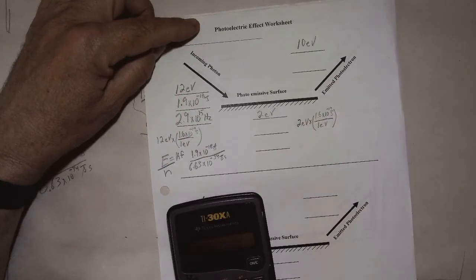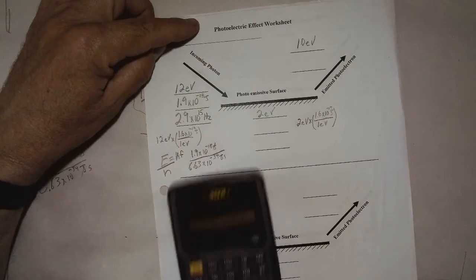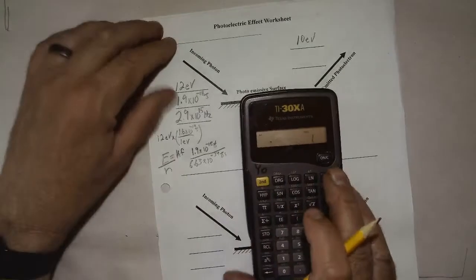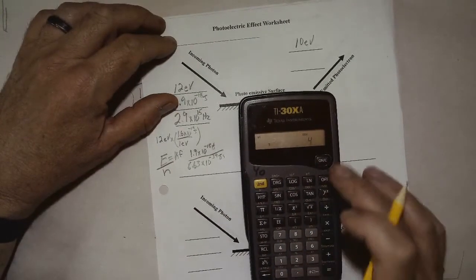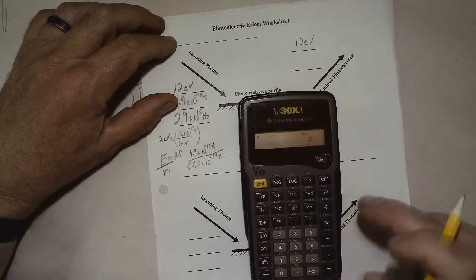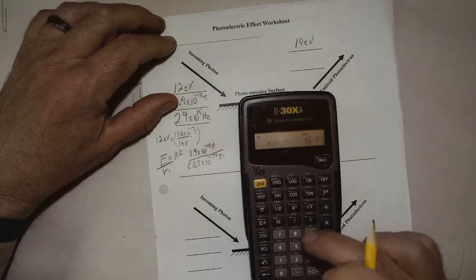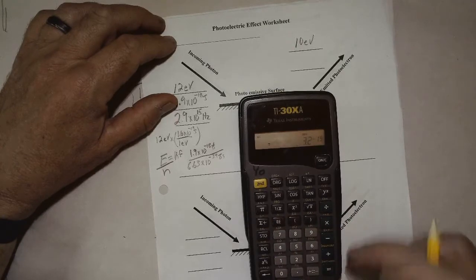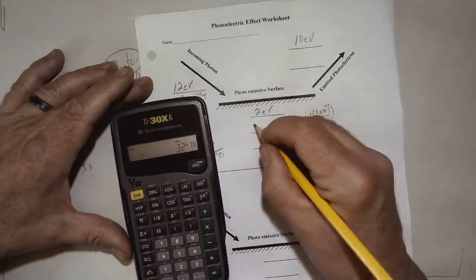So 2 times 1.6 EE19. Make sure you can see that. 2 times 1.6 EE19 negative equals 3.2 times 10 to the negative 19th joules.